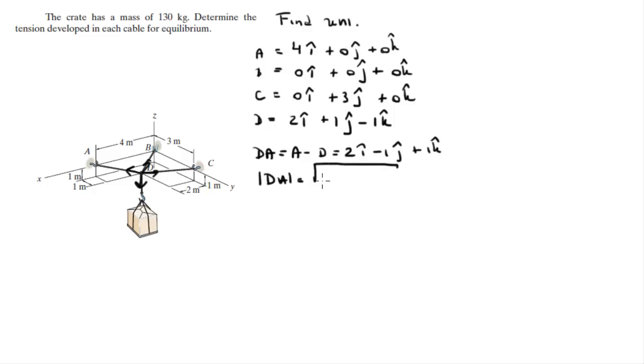Then you need to find the magnitude of this vector, which is found by doing the square root of x squared plus the y component squared plus the z component squared. So it's 2 squared plus 1 squared plus 1 squared, and then square root of it, that comes to be 2.45.